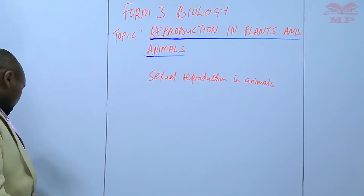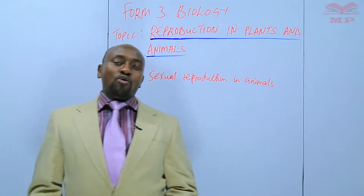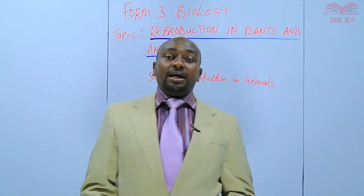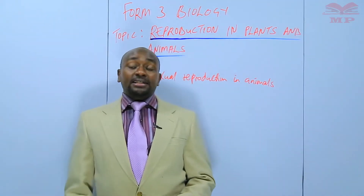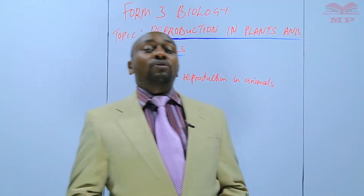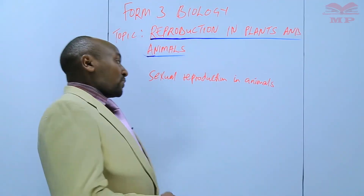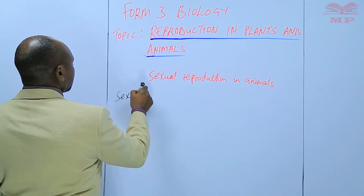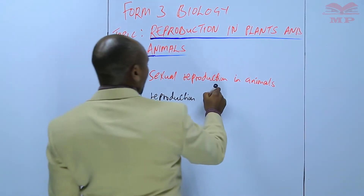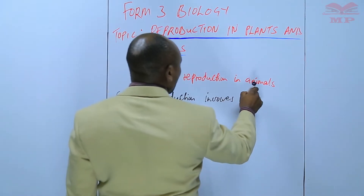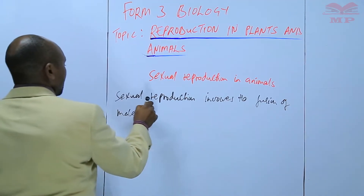Before we get into the details about sexual reproduction in animals, it is important to reflect a little bit on sexual reproduction. We know that this is the type of reproduction that involves the fusion of the male and the female gametes.